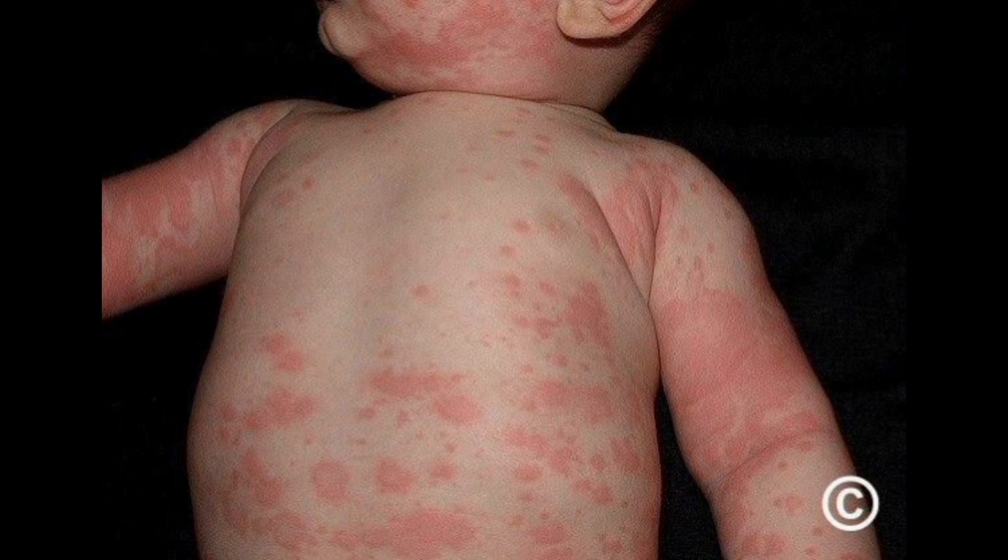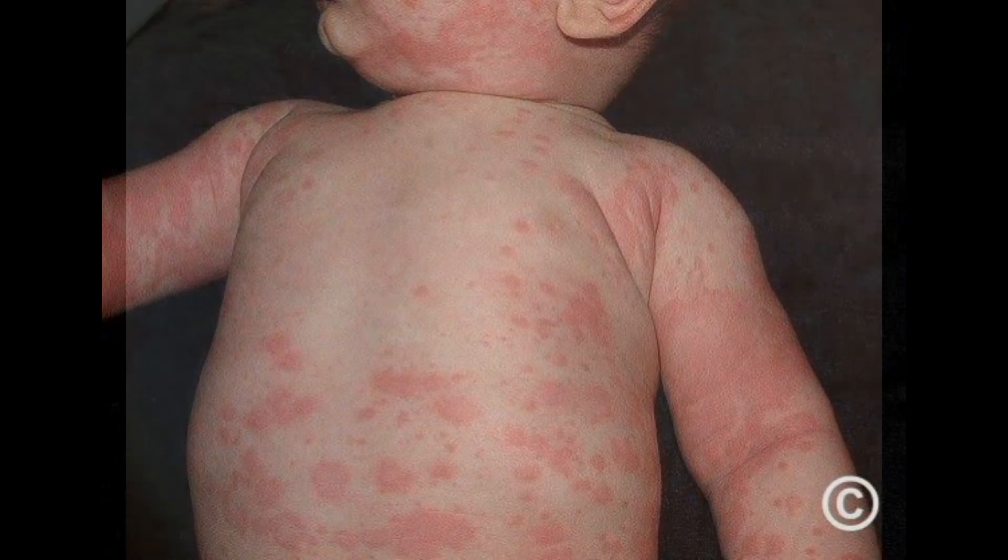So this is the picture. The urticaria - here are the hives or different types of wheels or welts. Here you can see the welts or natural rash, a raised itchy rash that appears on the skin. Remember,